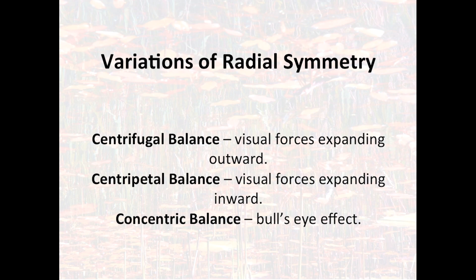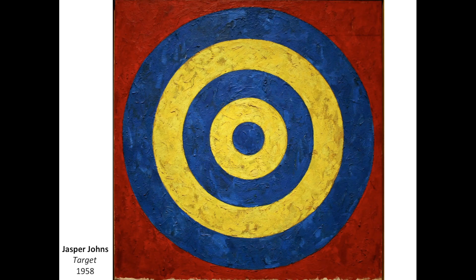There are variations on radial symmetry. Centrifugal balance involves visual forces that start in the center and expand outward toward the edges. Centripetal balance is the opposite — forces start from the edges and move toward the center. Concentric balance is essentially the bullseye effect, seen in Jasper Johns' 'Target' painting from 1958, where everything radiates from the edge into the center and back, continuously moving in and out, forward and backward.